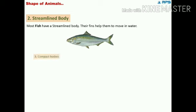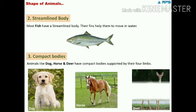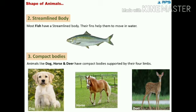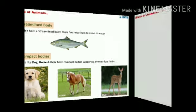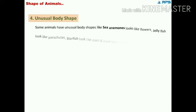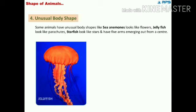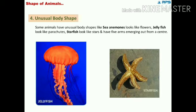Next is compact bodies. Animals like dog, horse, and deer have compact bodies supported by their long four limbs. Some animals don't have a defined body shape — sea animals look like flowers, jellyfish look like parachutes, and starfish look like stars.